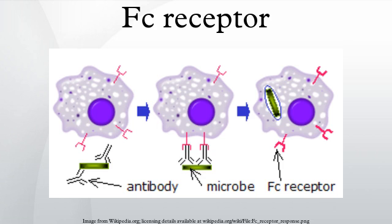An FC receptor is a protein found on the surface of certain cells, including B-lymphocytes, follicular dendritic cells, natural killer cells, macrophages, neutrophils, eosinophils, basophils, and mast cells, that contribute to the protective functions of the immune system.